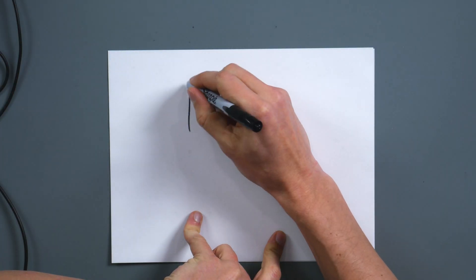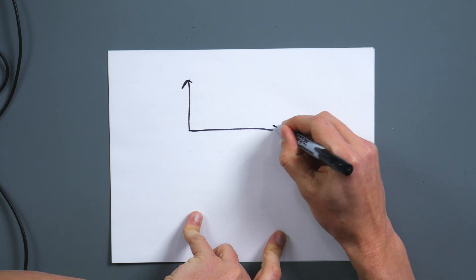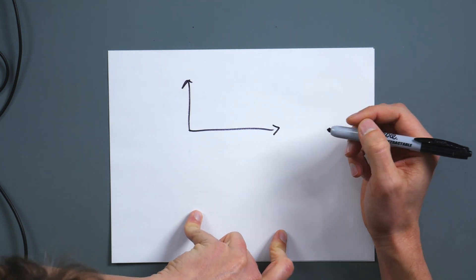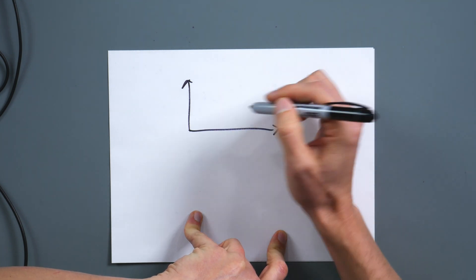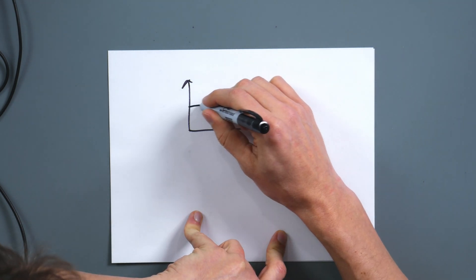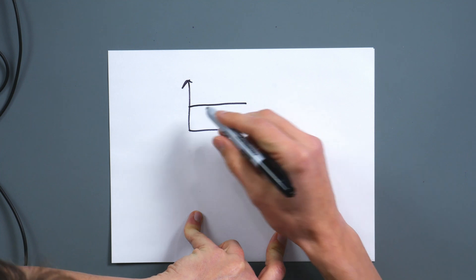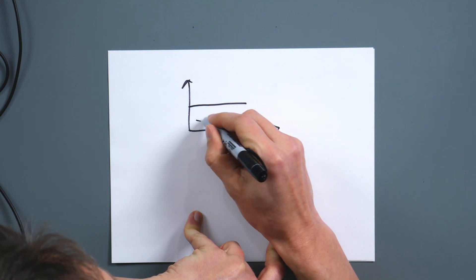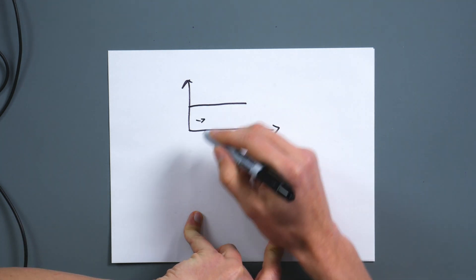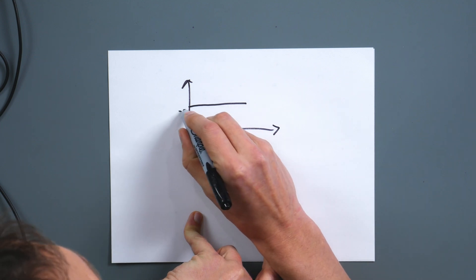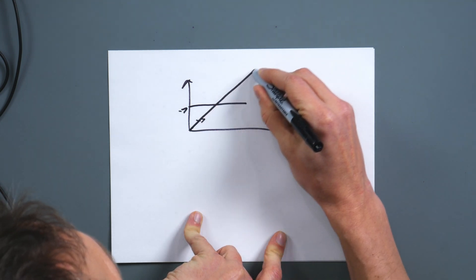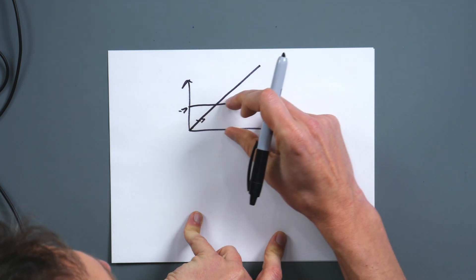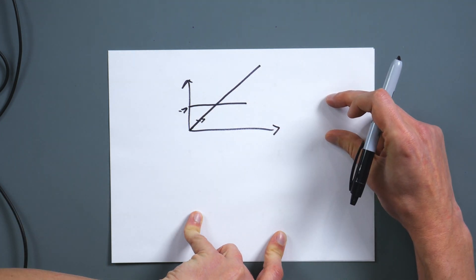First, I just want to go over integration really quick. With integration, the idea — if it's been a couple years since you've done any calculus — is to find the area under the curve. So if you have a constant input like that, as you are going in this direction, the area under the curve increases. If this is your input, then your output will increase like that as you are constantly increasing the area under your curve.